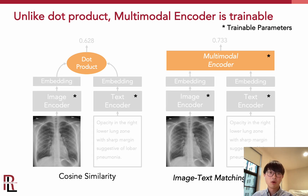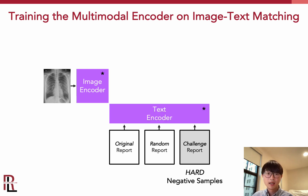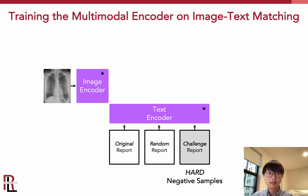One key advantage of the multimodal encoder is that it is trainable, which means we can tune it to classify some of the more challenging cases that a simple dot product cannot easily handle. Here we have an image encoder that produces an image embedding, and we are matching this chest x-ray image to three reports: the original report, which is a positive sample; a random report, which is a negative sample; and a challenging report, which is somewhat similar yet still different from the chest x-ray input.